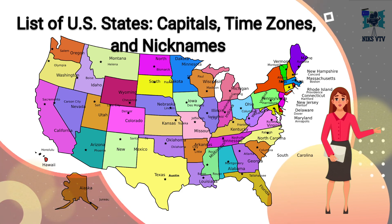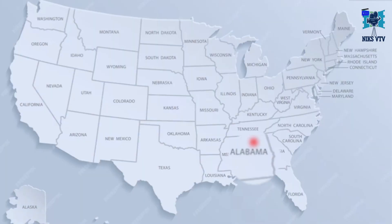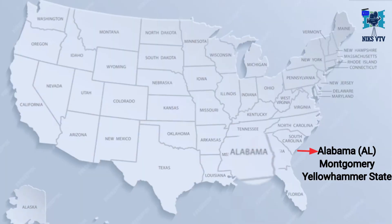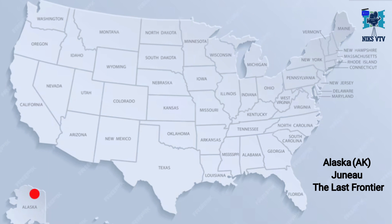So let's start. The first state is Alabama and its capital is Montgomery, its time zone is CST — that is Central Time Zone — and its nickname is the Yellowhammer State. Next is Alaska and its abbreviation is AK, its capital is Juneau, its time zone is Alaska Standard Time Zone, and its nickname is the Last Frontier.